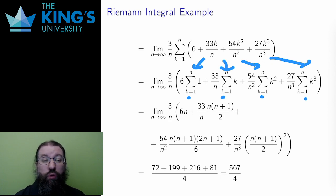I used those four formulas: n for the first, n times n plus 1 over 2 for the second, n times n plus 1 times 2n plus 1 over 6 for the third, and n times n plus 1 over 2 all squared for the last.